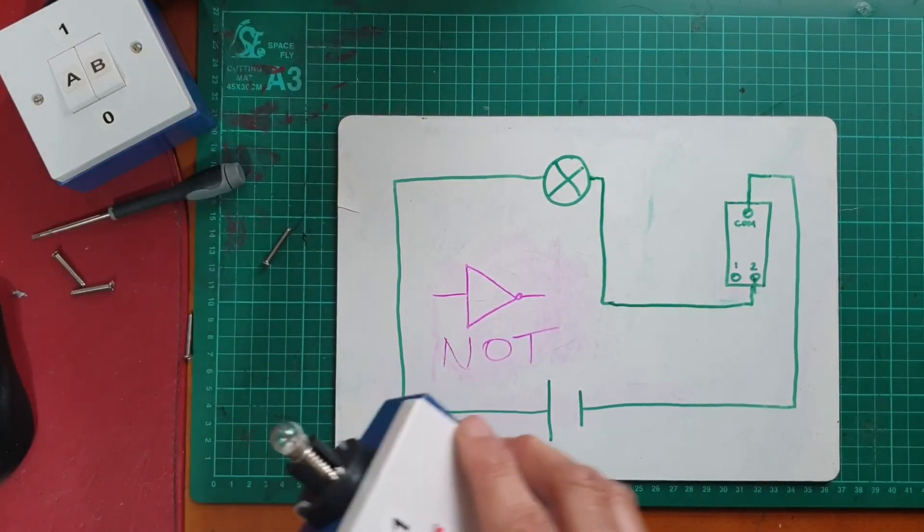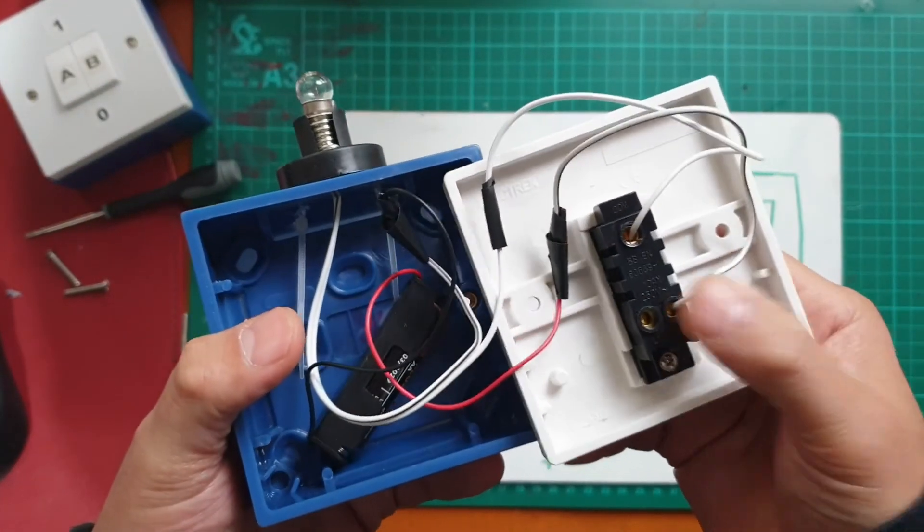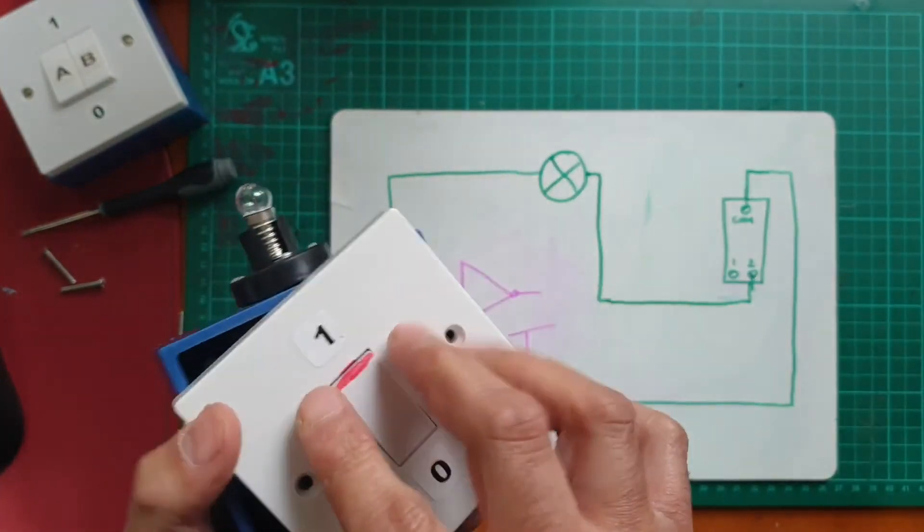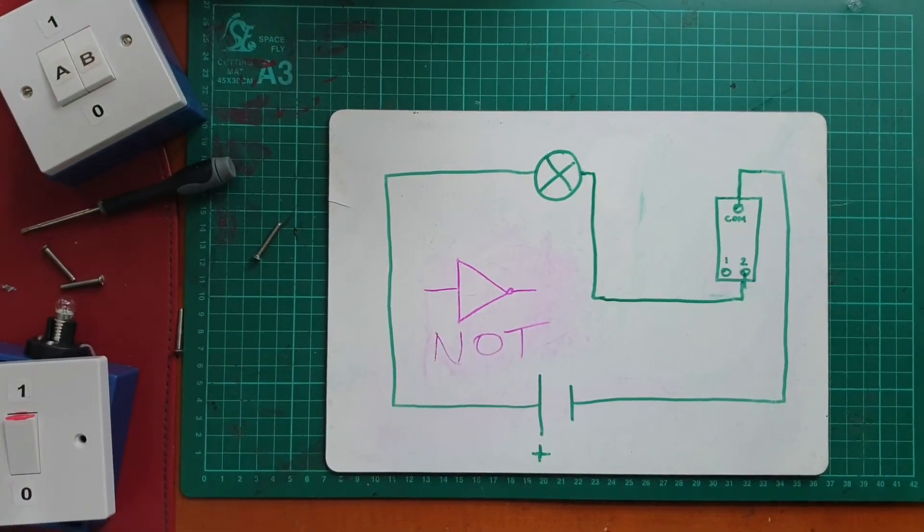And finally for the NOT, can't really go wrong because in this case we only have one switch. And here's the wiring diagram.